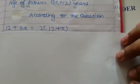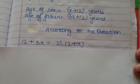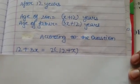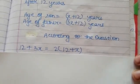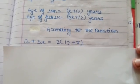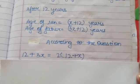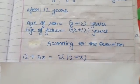According to the question, 12 plus 3X equals 2 times 12 plus X. What is 12 plus X? 12 plus X is age of the son after 12 years. It is given that age of father is twice the age of the son after 12 years. That is why you have taken this equation. Okay?